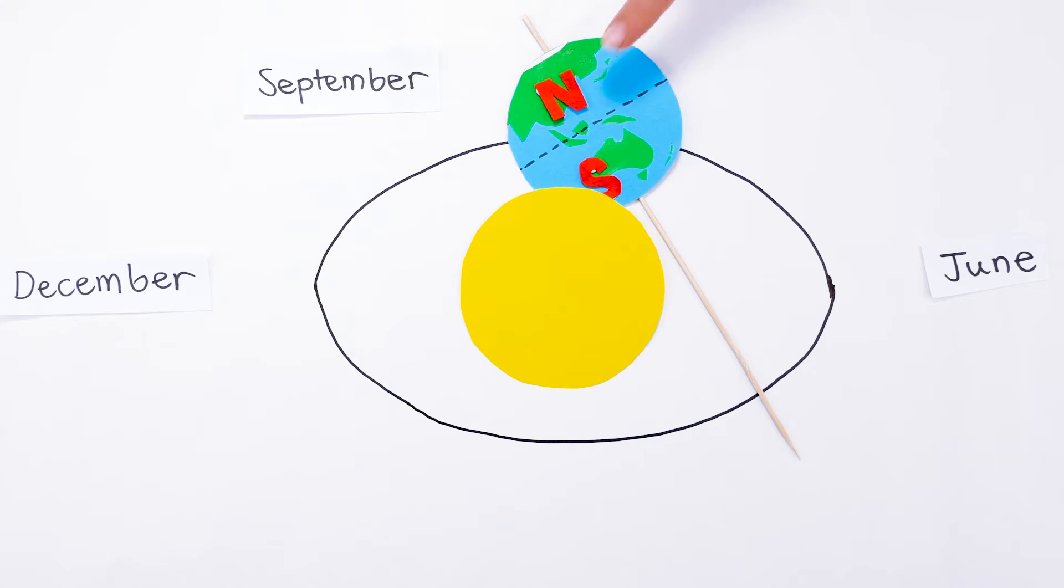This means that the hemispheres will get a roughly equal amount of heat from the Sun. Days and nights are equal in length and it will start to warm up in the southern hemisphere. That's spring. It will start to cool down in the northern hemisphere. That's autumn.